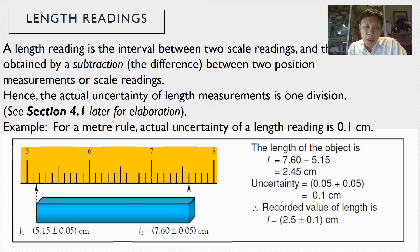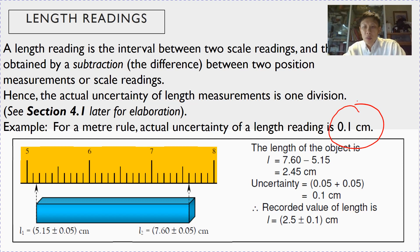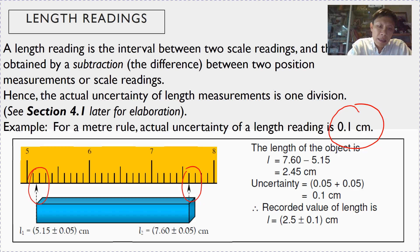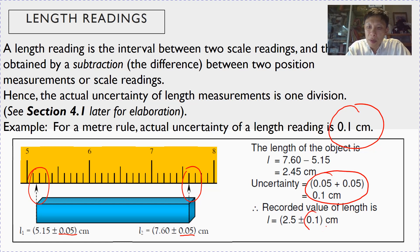Another type of reading is called a length reading, which is when you take the difference between two scale readings. You will learn in section 4.1 that when you take the difference between two scale readings, the uncertainties add up. So for a length reading using a ruler, the uncertainty per scale reading is 0.05. Because you take the difference of two readings, you add 0.05 + 0.05 to get a total uncertainty of 0.1.